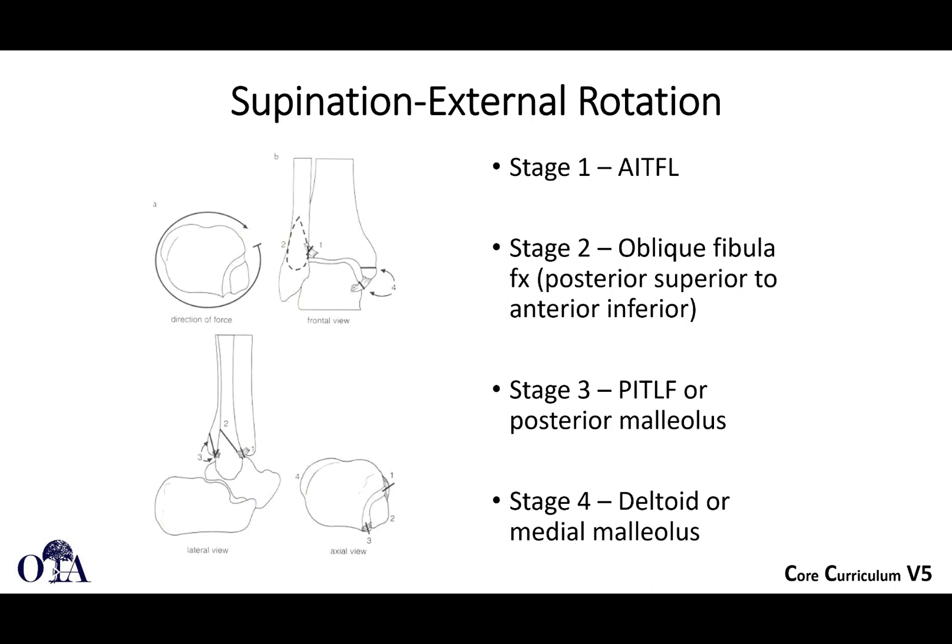Nevertheless, this is used so frequently you really need to understand it. Supination external rotation is one of the common fracture patterns — you have this injury that goes around in a circle, as shown on the top left. Stage 1 is an AITFL ligament injury. Stage 2 is when you get this oblique fibula fracture, which is very characteristic: a posterior superior to anterior inferior fracture line — that's the classic fracture line direction you're going to see.